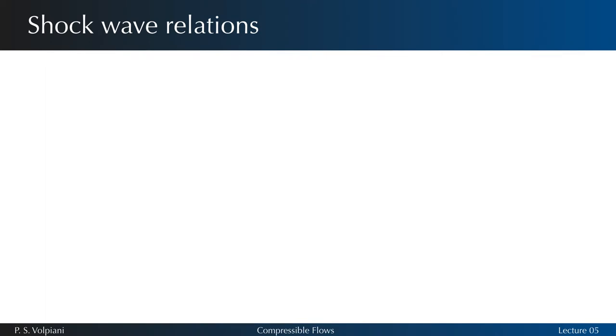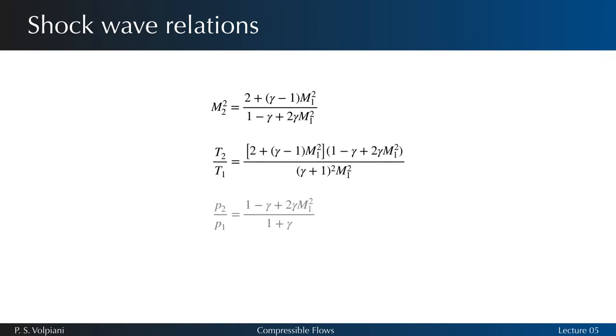Substituting the previous equations, we see that the ratios of temperature and pressure before and after the shock are functions of the Mach number M1 only. And using the perfect gas equation of state in the continuity equation, we also obtain an expression for the ratio of velocities and densities.